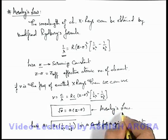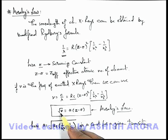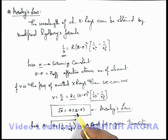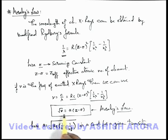If we plot the variation graph between the frequency of emitted X-rays and the atomic number of the element, this will be a straight line with a positive slope and a negative intercept on the frequency axis. So this is the way how Moseley's Law is analyzed.